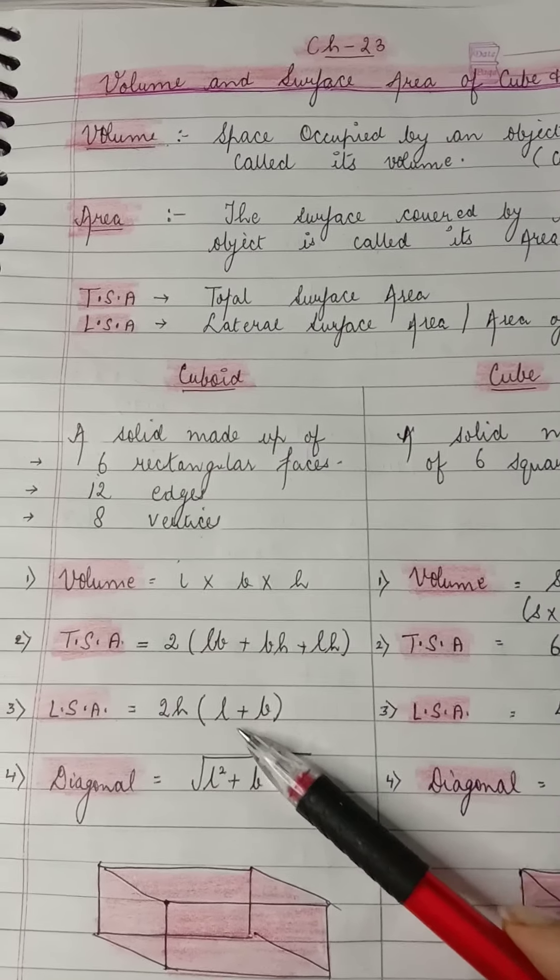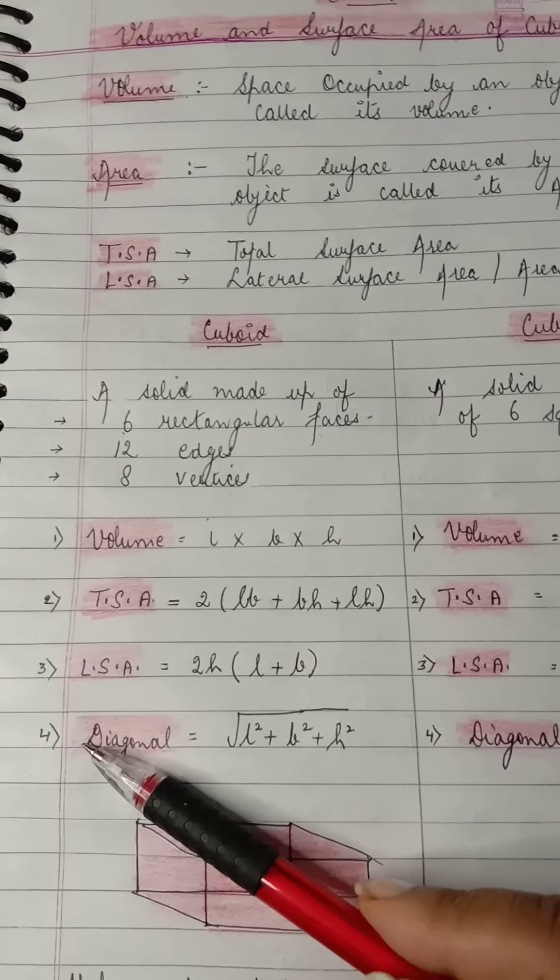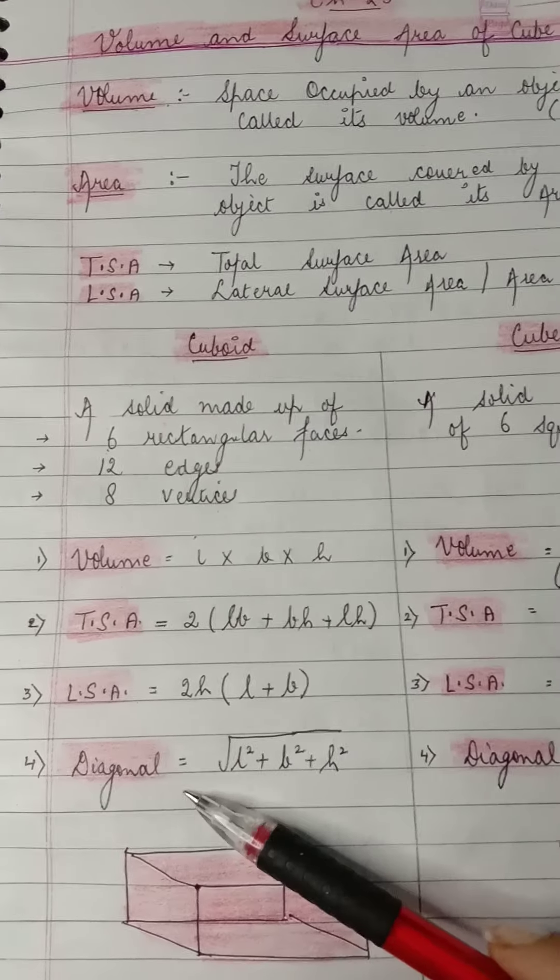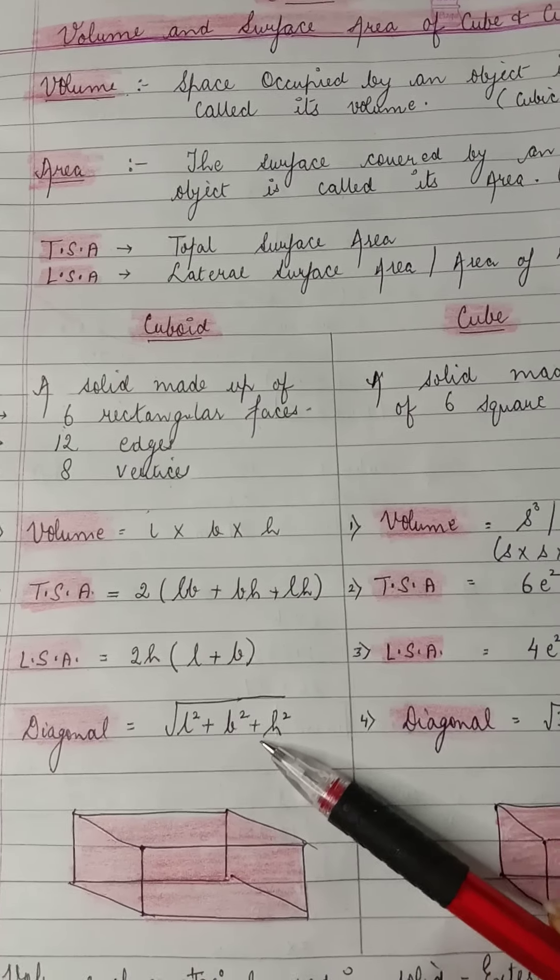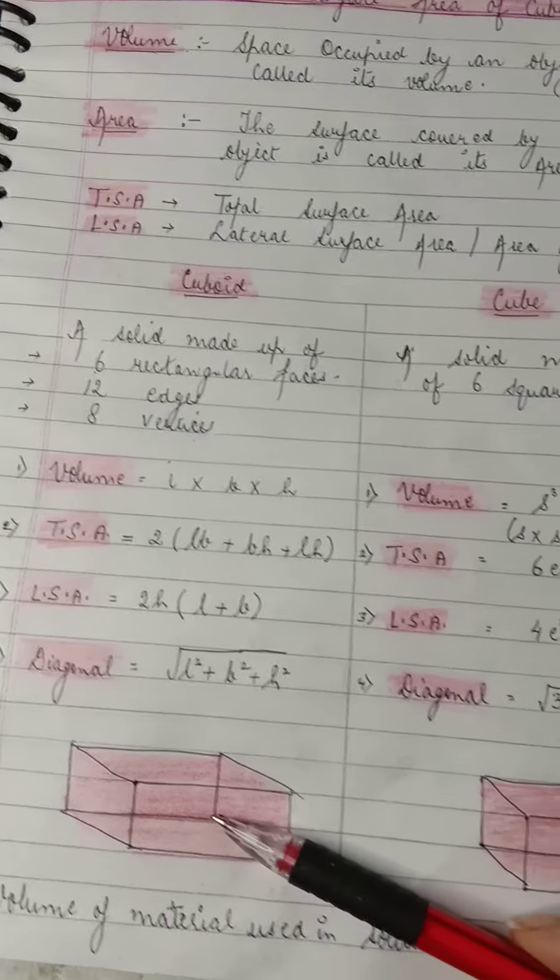Next is diagonal. Diagonal of a cuboid is under root length square plus breadth square plus height square. That's what a cuboid looks like.